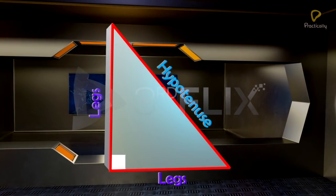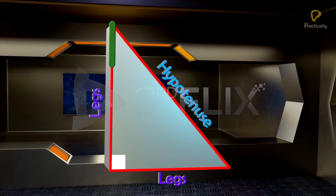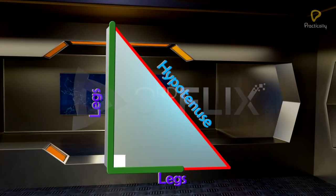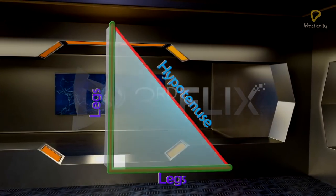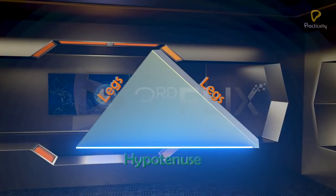Want an easy way to remember which ones are the legs? If you trace them, they will form the letter L for legs. Don't assume the hypotenuse is always drawn slanted.